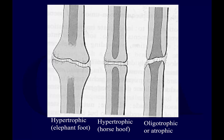Here is the hypertrophic — the elephant's foot or horse's foot appearance — and the oligotrophic appearance. With atrophic, there's no callus at all. In the hypertrophic example, the normal cortices were probably here, but clearly callus is forming outward. The fracture cannot bridge across, so instead bone just keeps proliferating medially and laterally rather than bridging, creating that expanded appearance.